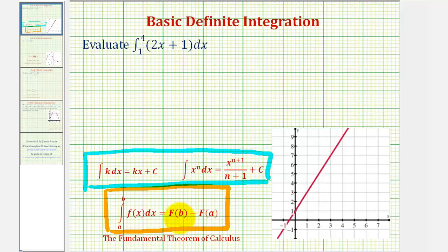If big F of X is the antiderivative function, notice how the definite integral is equal to big F of B, where B is the upper limit of integration, minus big F of A, where A is the lower limit of integration.